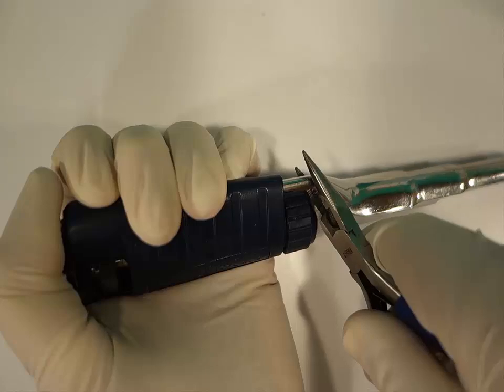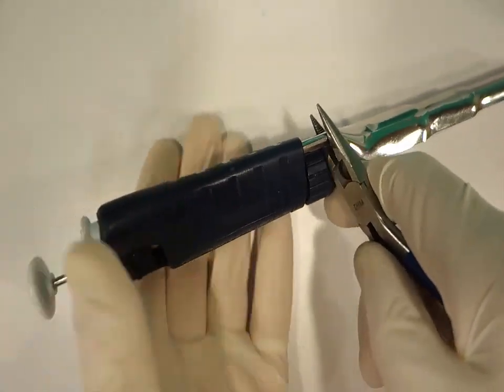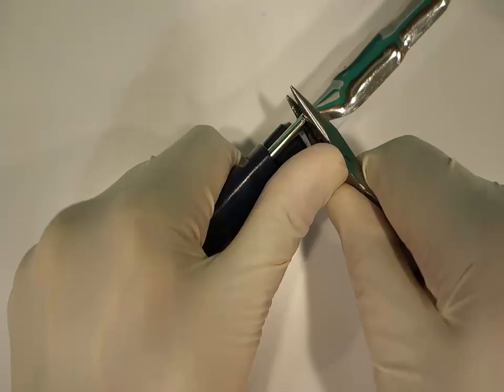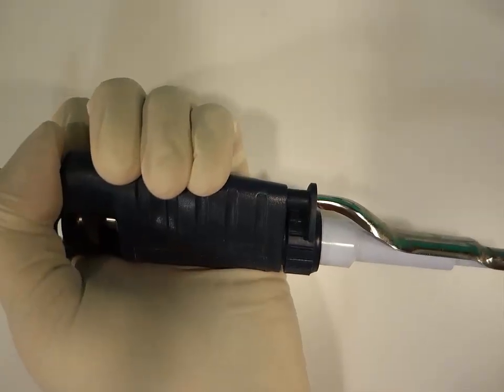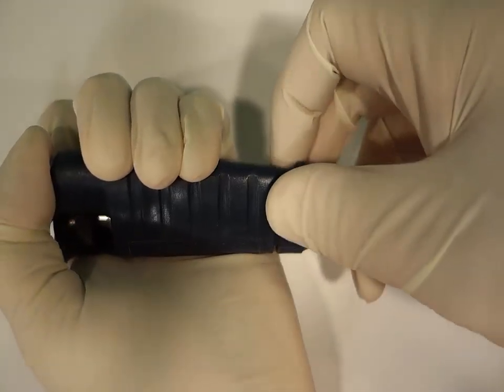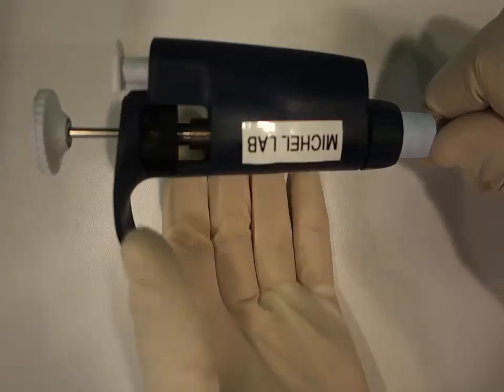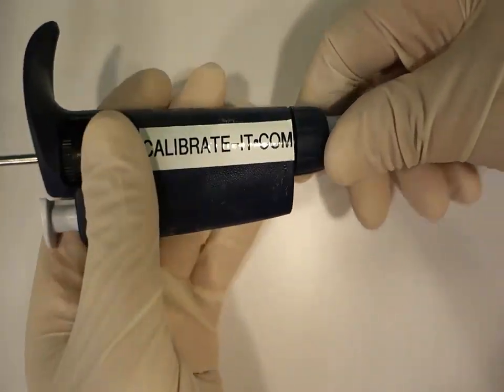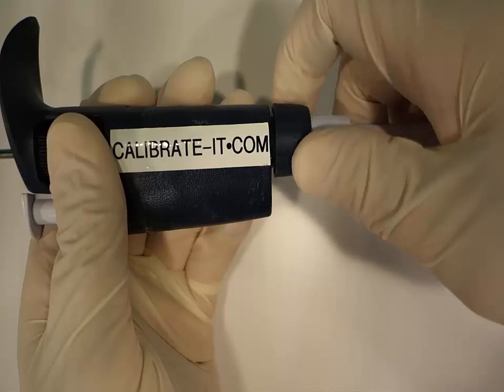If it's held on by friction, you can use pliers if you need to. Or just pull it off. Hold the pipette close to your clean work surface to make sure no parts are lost.